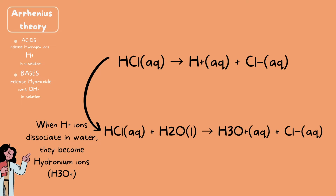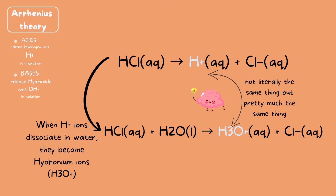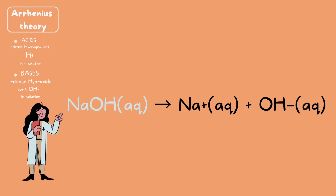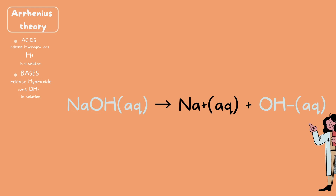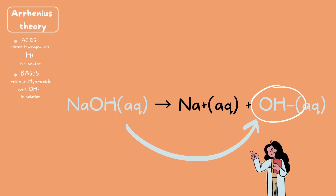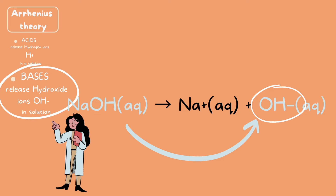Here we have NaOH, and it dissociates into sodium ions and hydroxide ions. The hydroxide ions in the solution are what we're focusing on, because by definition bases release hydroxide ions in a solution. Because NaOH created or released these hydroxide ions, that makes NaOH the Arrhenius base.